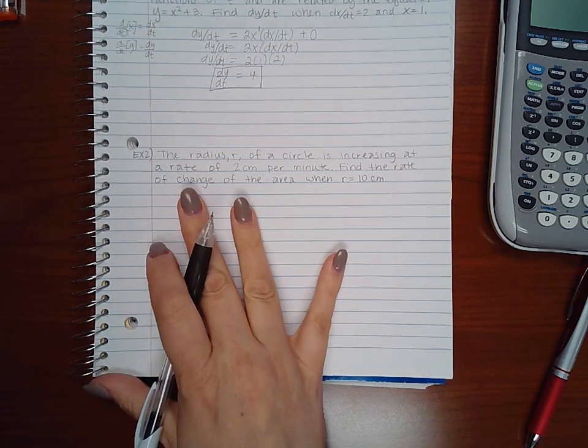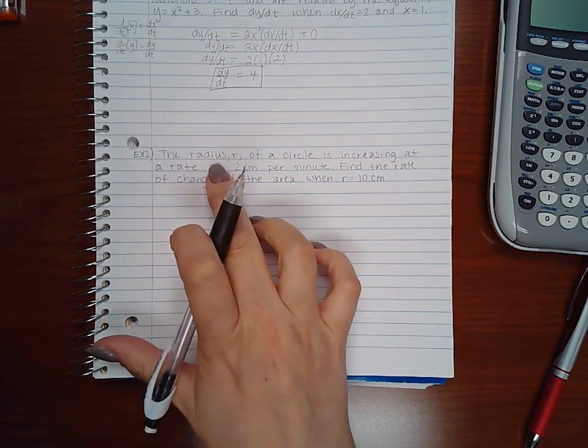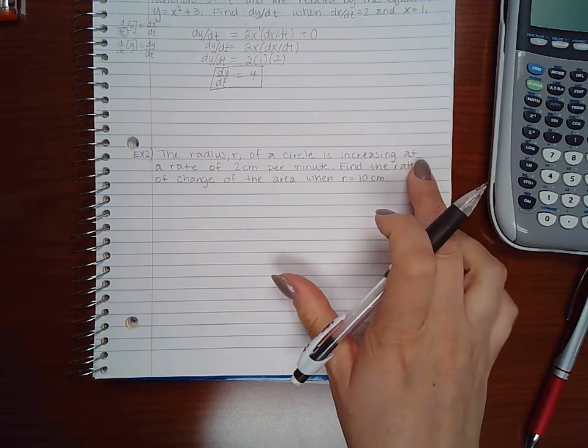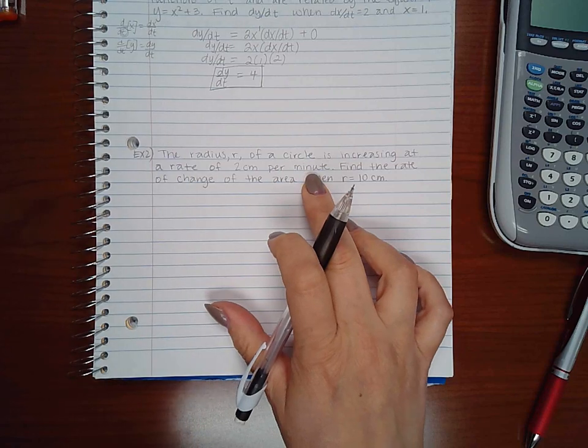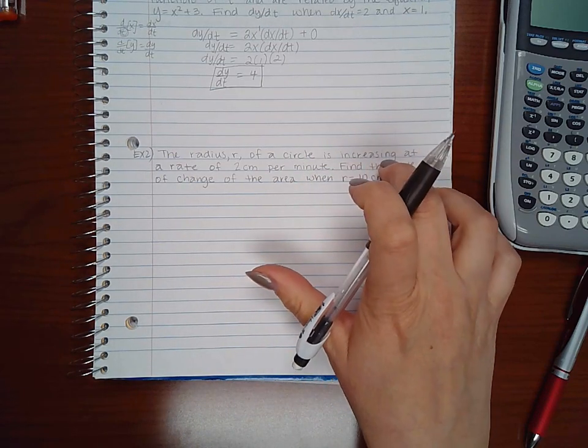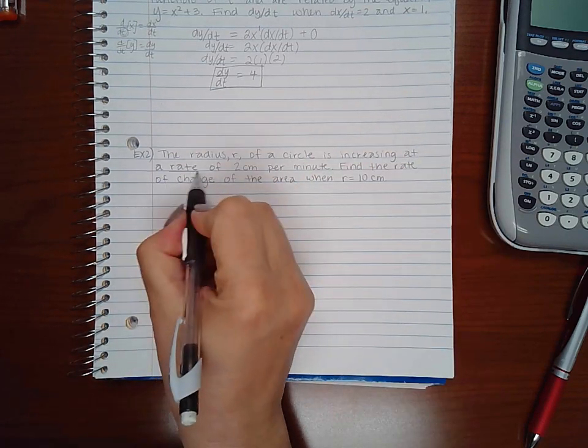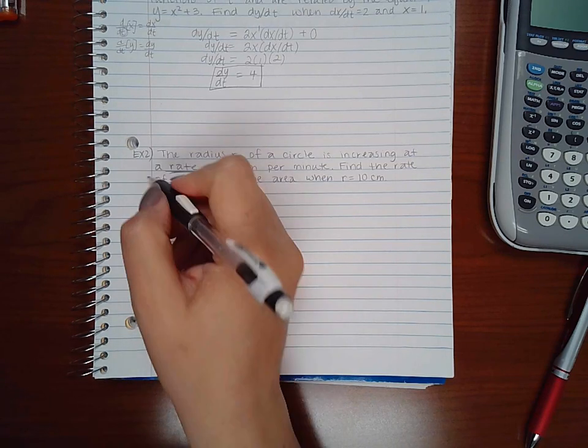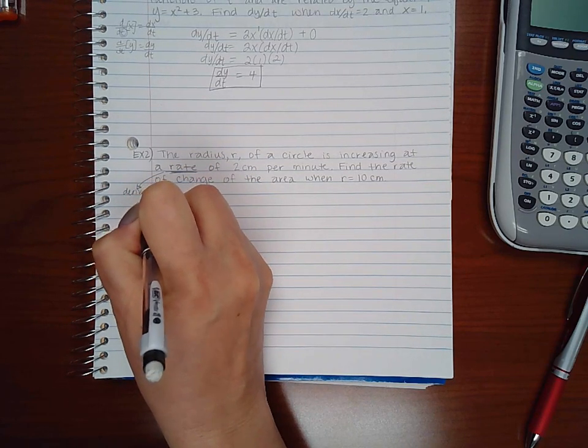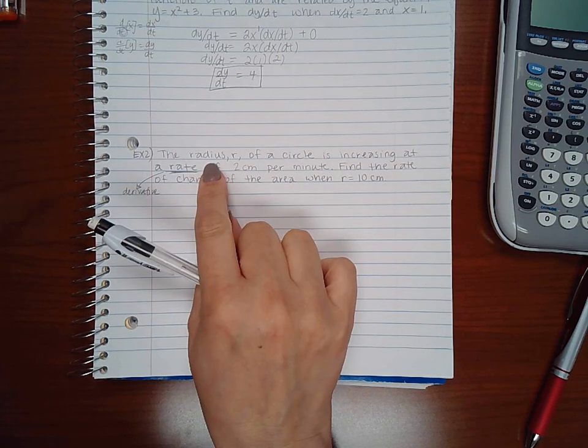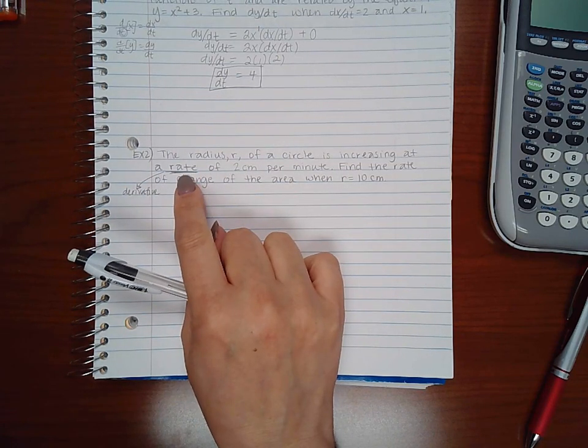Okay, so for example 2 it says the radius of a circle is increasing at a rate of 2 centimeters per minute. So whenever it's increasing or decreasing and you're talking about a rate, you're talking about a derivative. So that means a derivative, and it says the radius is what is increasing at a rate.